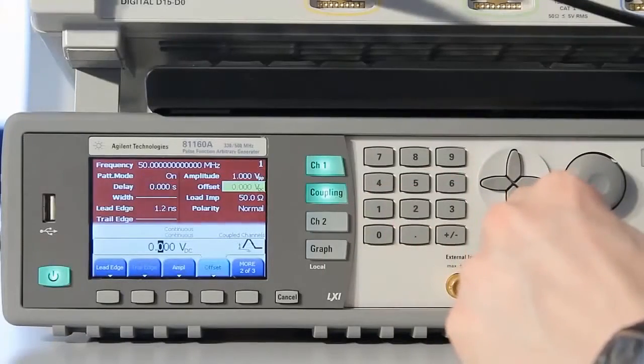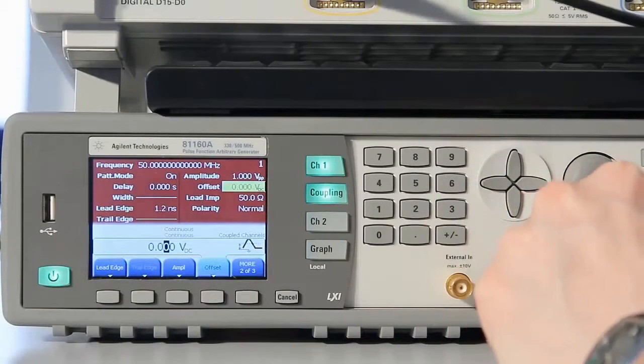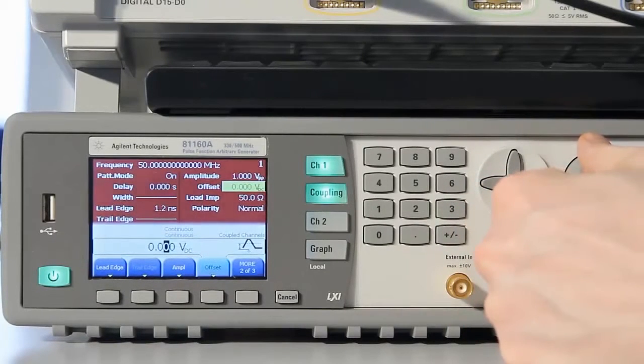Let me select the offset control item and change the DC voltage by turning the knob.